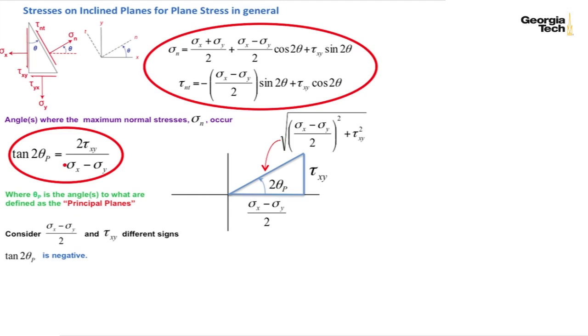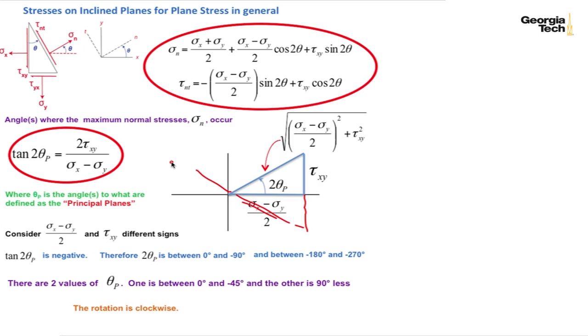And if that occurs, tangent of 2 theta sub p is going to be negative. And so therefore, one would be negative, the other one would be positive, and so we would be somewhere between 0 and minus 90 degrees or somewhere between minus 180 and minus 270 degrees. And so this time the rotation would be clockwise.